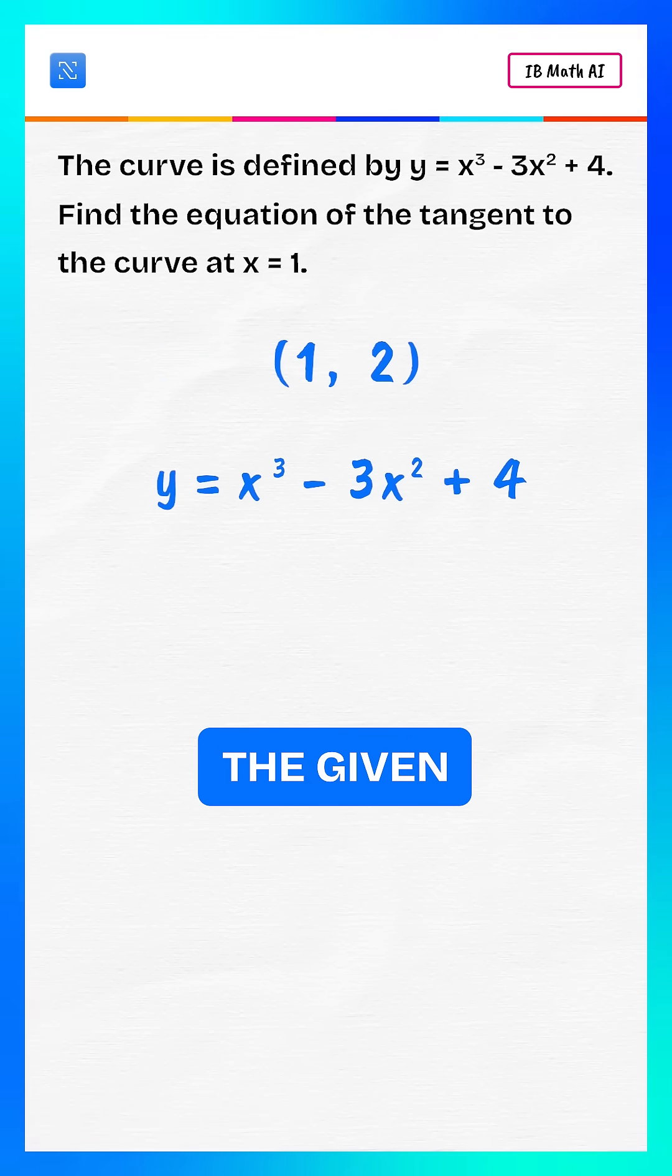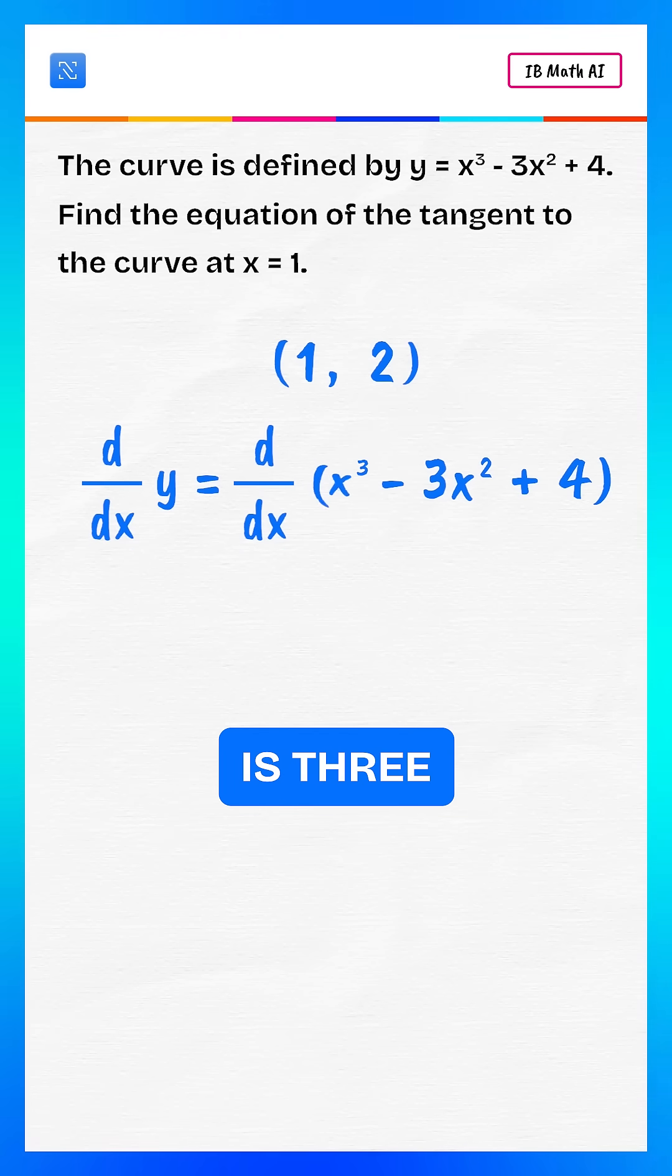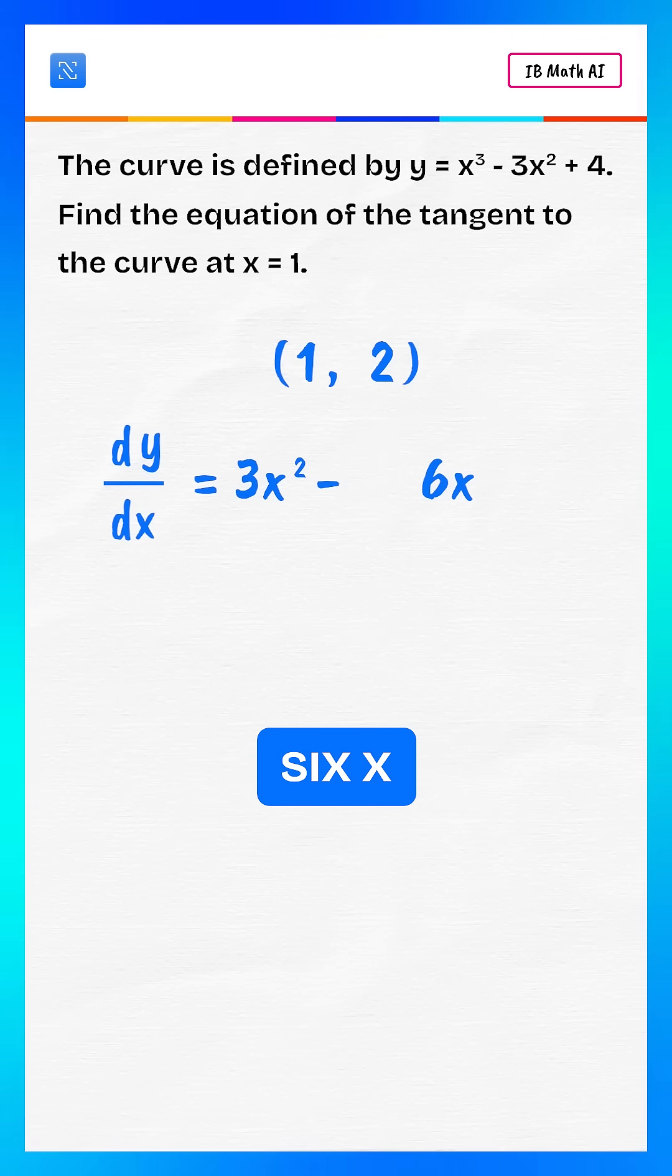Now, differentiate the given equation with respect to x. The derivative of x cubed is 3x squared and the derivative of minus 3x squared is minus 6x.